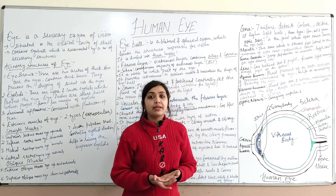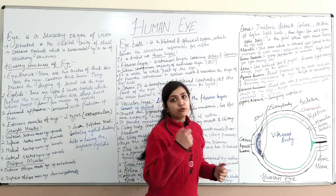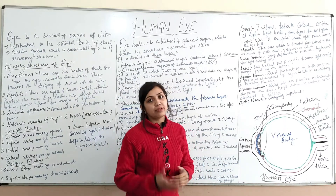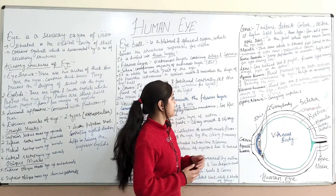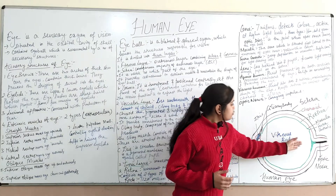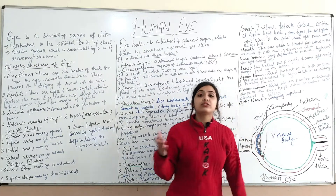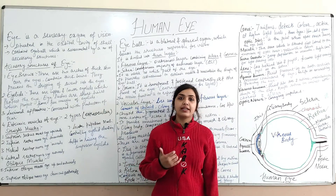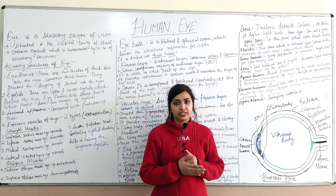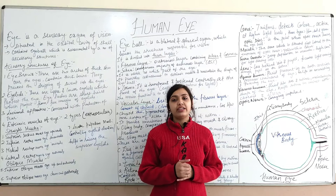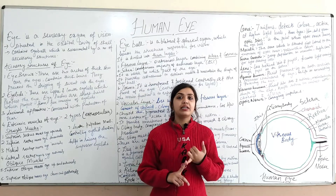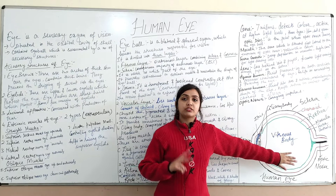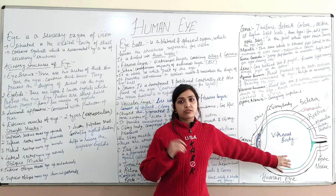The lens is present behind the iris and pupil. Its function is to focus the incoming light through the pupil onto the retina, where the image is formed. After image formation, impulses are transmitted through the optic nerve to the brain, enabling vision.